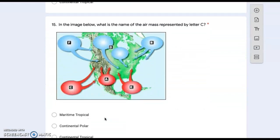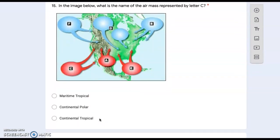Number fifteen: in the image below, what is the name of the air mass represented by letter C? C is over here, over water. Is it maritime tropical, continental polar, or continental tropical?